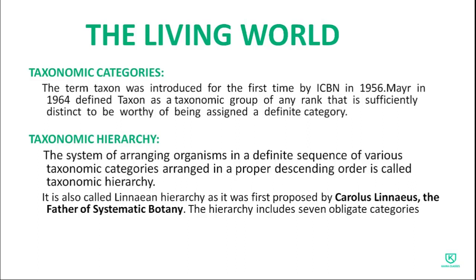Now move to taxonomic hierarchy. The system of arranging organisms in a definite sequence of various taxonomic categories in ascending or descending order is called taxonomic hierarchy. It is also called linear hierarchy, as it was first proposed by Carlos Linnaeus — also called the father of systematic botany.